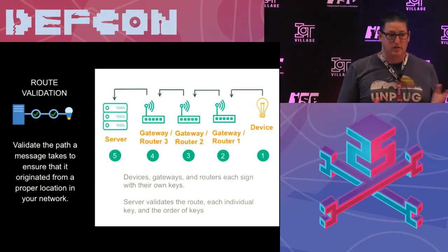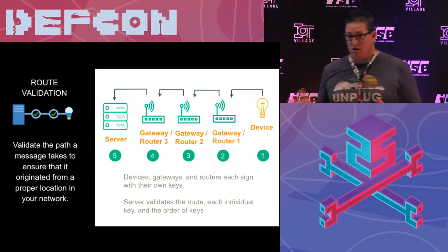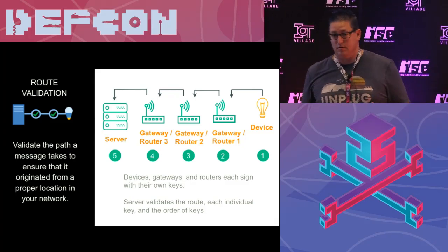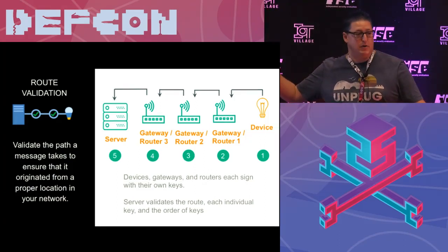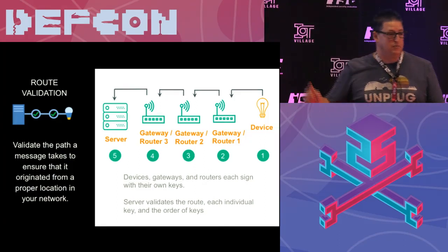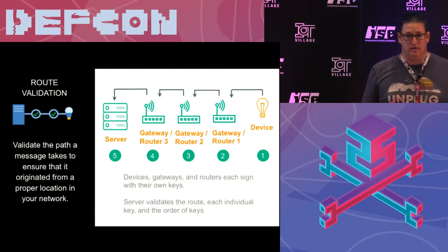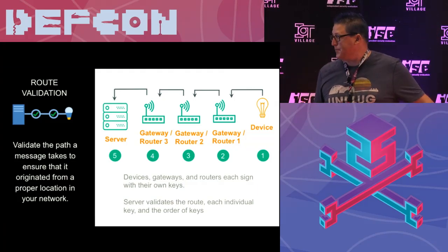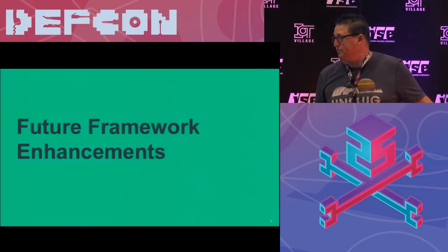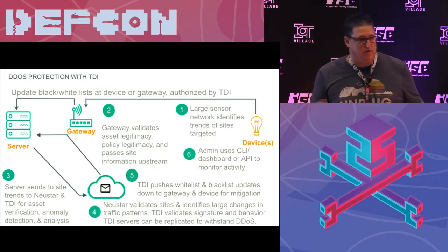When that message gets to my server, I not only verify the device message and the gateway messages — I validate the order and the timestamp of them. So if you've hijacked a request or cloned a device and you're not in that LAN segment, I'm going to notice. Is this going to stop every attack? No. Is it going to make it harder? Absolutely. We can do this with apps, gateways, or any of the things in your environment that you control.